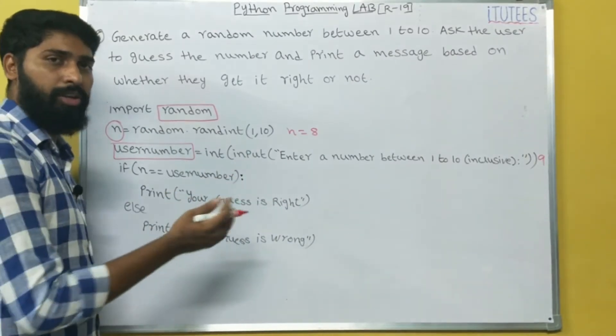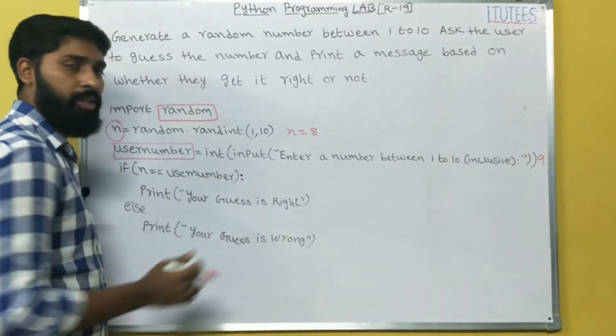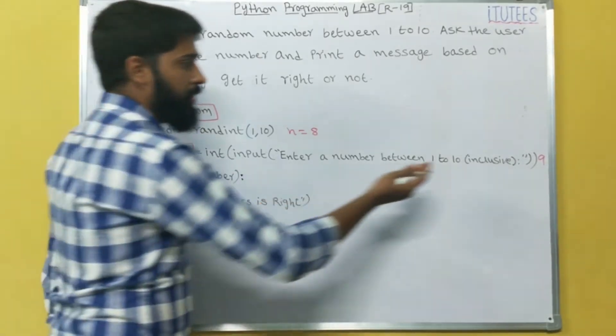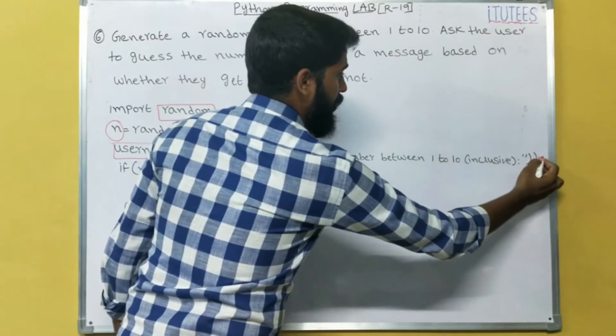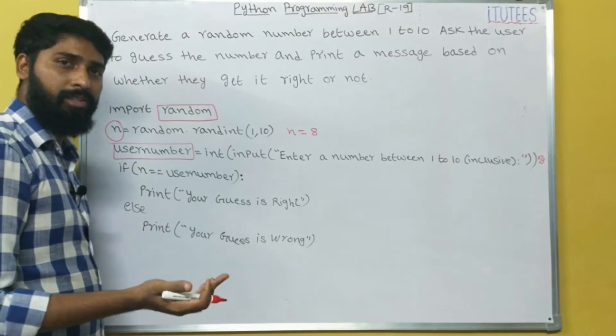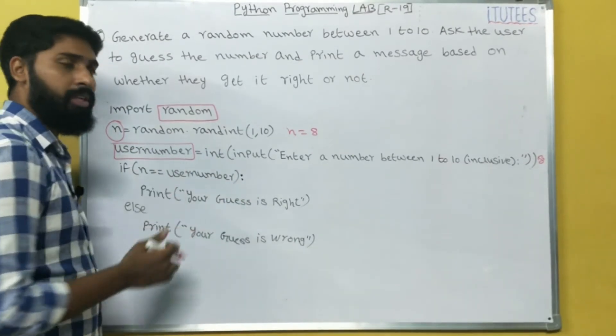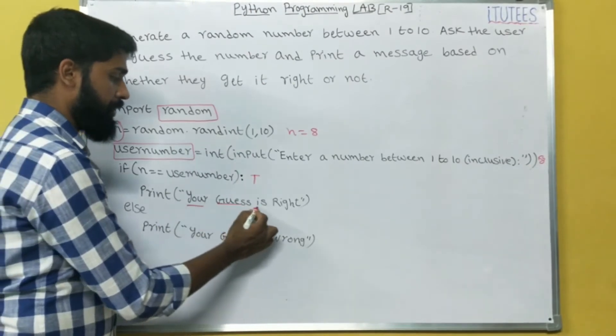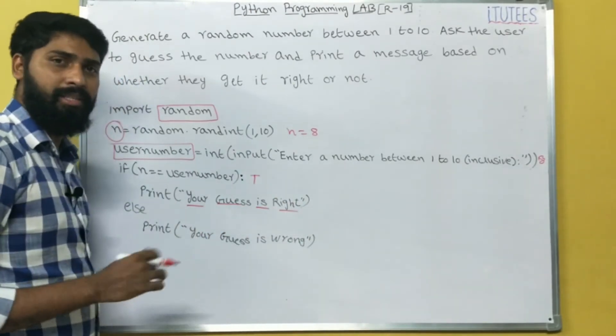Now, what else are we going to print? We print your guess is wrong. This is the output. If the entered number is also 8, that means n equals to 8 and the user number is also 8. 8 equals to 8, it is true. In this case, you are going to print your guess is right.